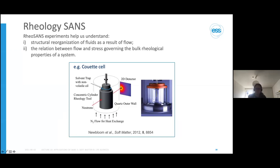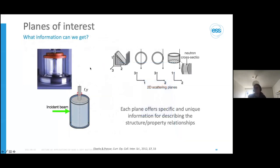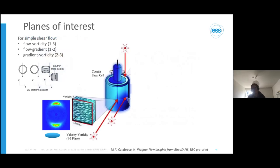Rheo-SANS is an excellent tool to understand structural reorganization under flow. In this study we focus on the Couette cell, where we have a cup and a bob—the inner cup spins and applies shear deformation to the sample in the gap. There are different planes of interest: the radial plane with the neutron beam going directly through the cup, and the tangential or one-two shear plane, which is slightly more difficult to probe, but each plane offers specific and unique information for describing structure-property relationships.